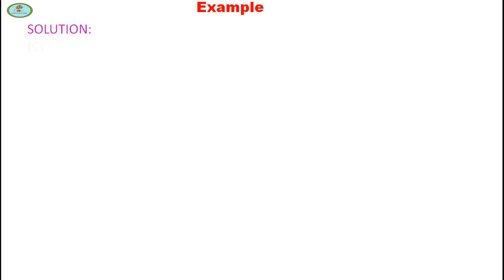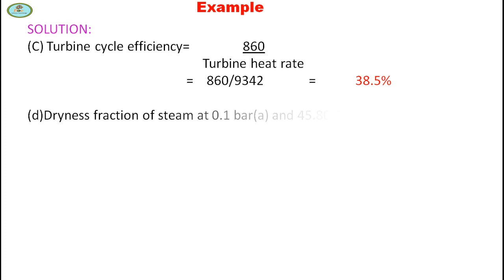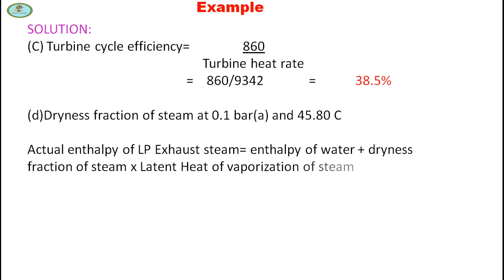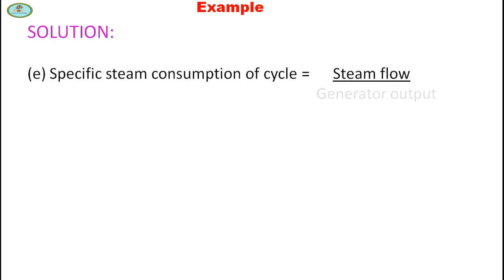Turbine cycle efficiency equals 860 divided by turbine heat rate = 860 / 9342 = 38.5%. For dryness fraction of steam at 0.1 bar and 45.80°C: actual enthalpy of LP exhaust steam = enthalpy of water + dryness fraction × latent heat of vaporization. Substituting: 2426 = 191.9 + x × (2584.9 − 191.9), giving dryness fraction of steam = 93.35%.